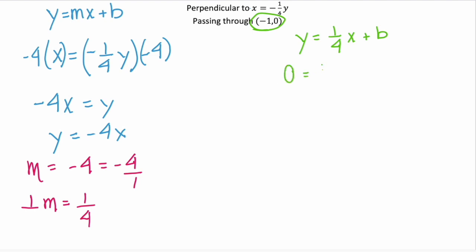Y is zero, and x is negative one. Or zero equals negative one-fourth plus b. Add one-fourth to both sides, and you see that b is equal to one-fourth.